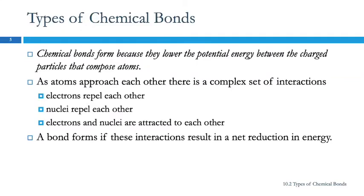So, types of chemical bonds. A chemical bond will form when doing so causes the potential energy to be reduced. There are charged particles in atoms — there are protons and electrons.